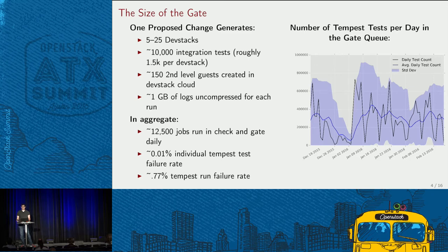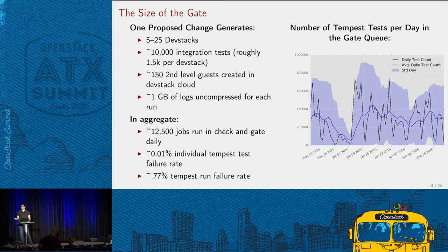Across both the check and gate queues, we have 12,500 jobs run every day. Our failure rates are really small percentages, but when you have 12,000 jobs, that becomes noticeable — especially to an individual pushing a change. When you multiply 12,500 by even 0.01 percent, that's a noticeable number, and it's always going to affect someone because someone is always pushing that patch.